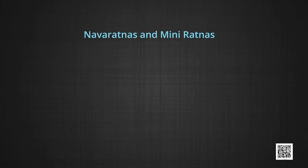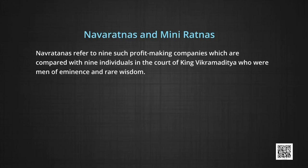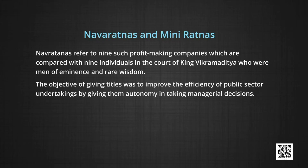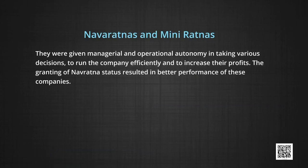Let us talk about the Navaratnas and Miniratnas. In the context of PSUs in India, Navaratnas refer to nine profit-making companies compared with nine individuals in the court of King Bikramaditya who were men of eminence and rare wisdom. The objective of giving these titles was to improve the efficiency of public sector undertakings by giving them autonomy in taking managerial decisions. For instance, some PSUs have been granted special status as Navaratnas — for example, BHEL (Bharat Heavy Electricals Limited), BPCL, SAIL, etc. They were given managerial and operational autonomy in taking various decisions to run the company efficiently and to increase their profits.